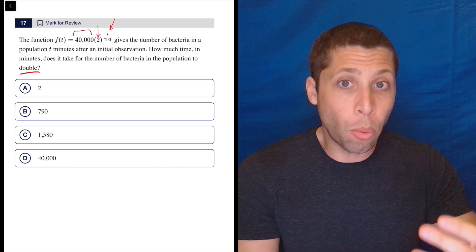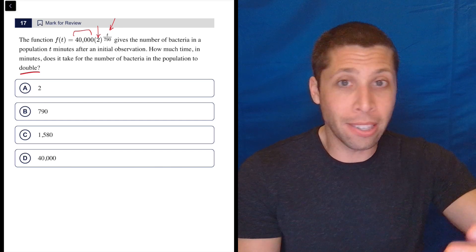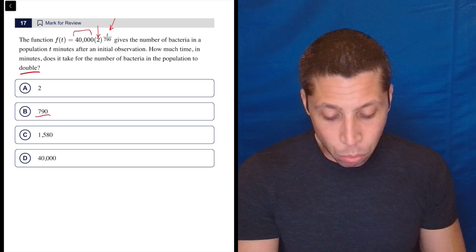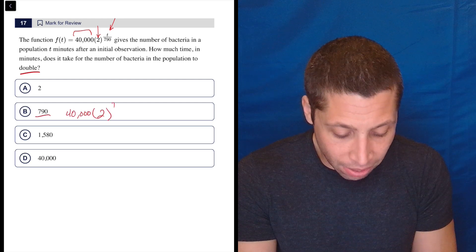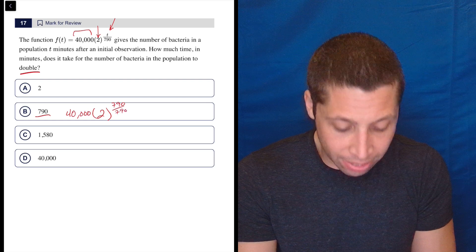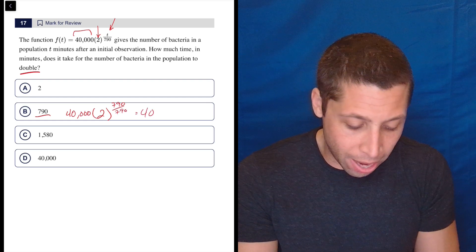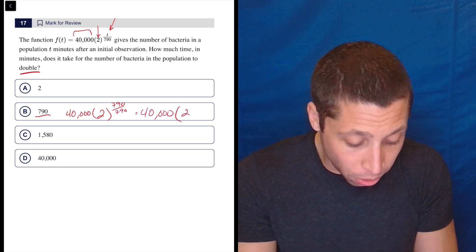So just trying to think what's going to cause it to be a nice number. Well, 790 would mean that I'd have 40,000 × 2^(790/790), which is 40,000 × 2^1.